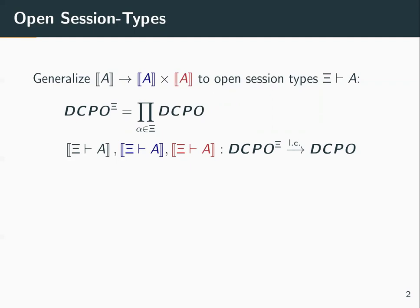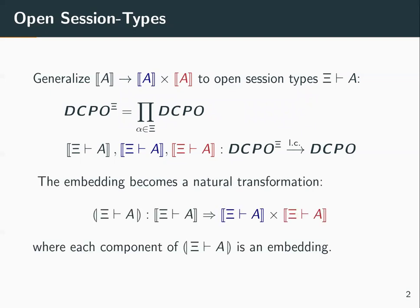I want to point out that, perhaps surprisingly, all three interpretations are covariant, and the reason is that types denote communications, not values. Then what we'll do is generalize from a single embedding to a natural transformation where each component is an embedding.